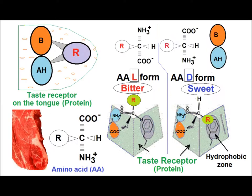To explain the different sweetening power of amino acid isomers L and D, a hydrophobic site R has been proposed. For example, the D form of an amino acid leads to a sweet taste. However, the L form of the same amino acid has a bitter taste. For the D form, the hydrophobic site of the receptor can interact effectively with the hydrophobic side chain of an amino acid. However, the L form does not allow this interaction.